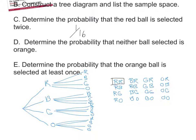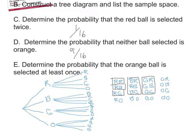Part D: Determine the probability that neither ball selected is orange. Going through the sample space and removing any outcome with orange, it looks like there are 9 different ways to not have any oranges. So the probability of getting no orange balls is 9 out of 16.